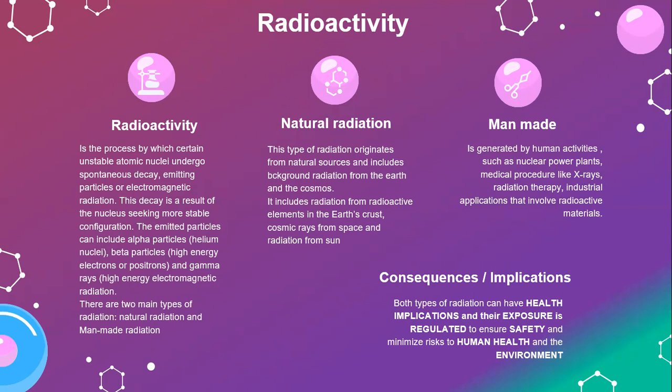There are two main types of radiation. One is natural radiation and the other one is man-made radiation. Natural radiation is a type of radiation which originates from natural sources and includes background radiation from the earth and the cosmos. It includes radiation from radioactive minerals in the earth's crust, cosmic rays from space, and radiation from the sun.